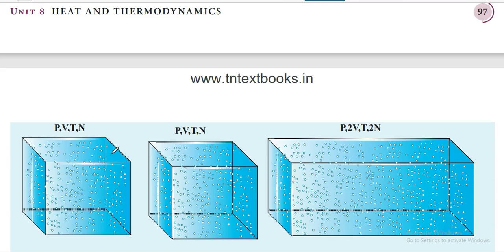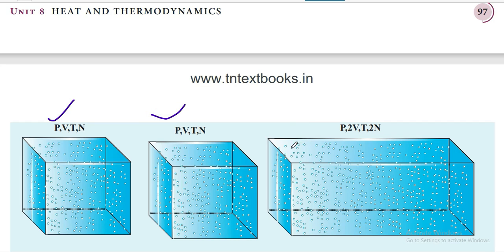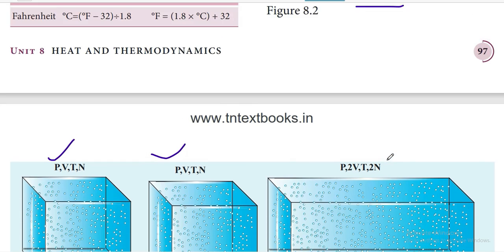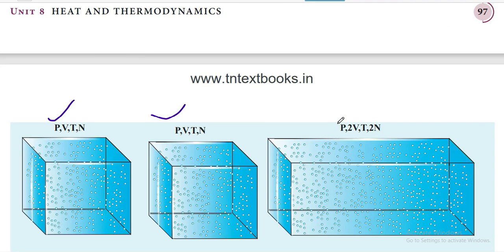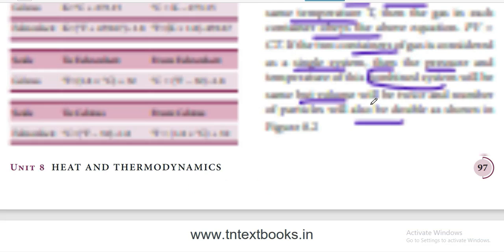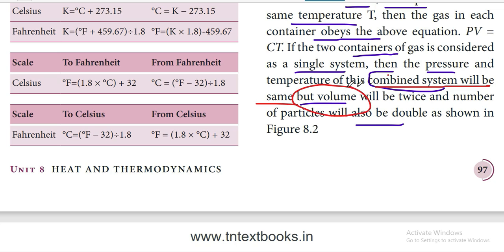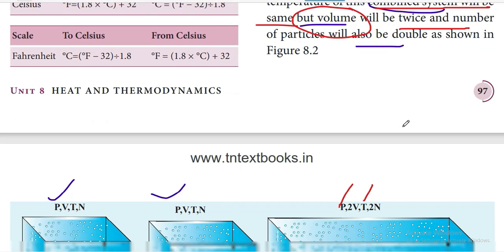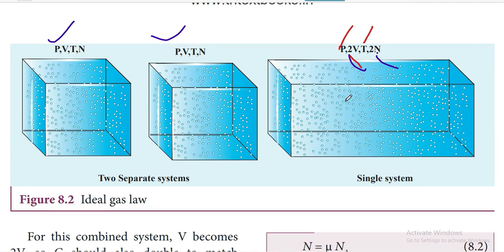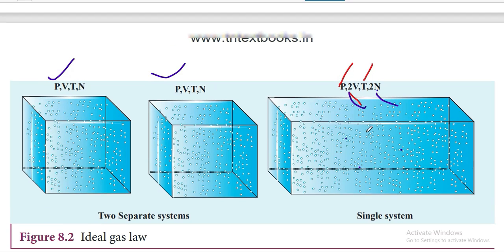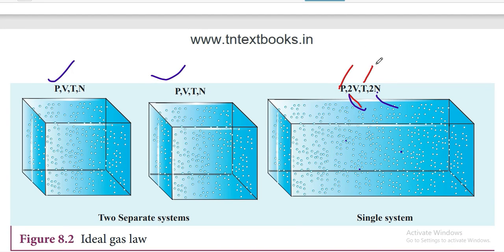So we have two separate containers here. When these two containers are merged, the pressure and temperature of the combined system will remain the same. But the volume will double and the number of particles will also double. Remember this point: pressure and temperature remain constant for this combined system.